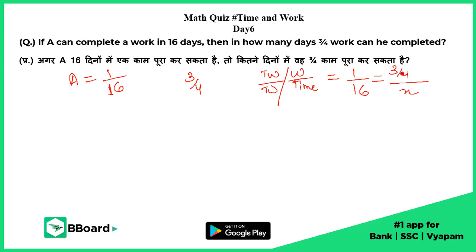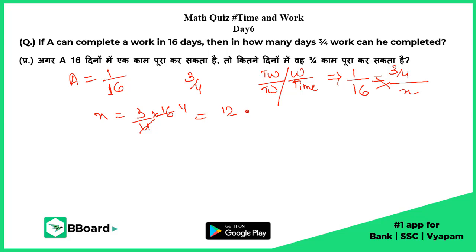This is also the speed, and we know the speed value is 1/16. So if we equate these two, we get x — either by cross multiplying. So x will be equal to 3/4 into 16, that is equal to 3 into 4, that is 12 days.